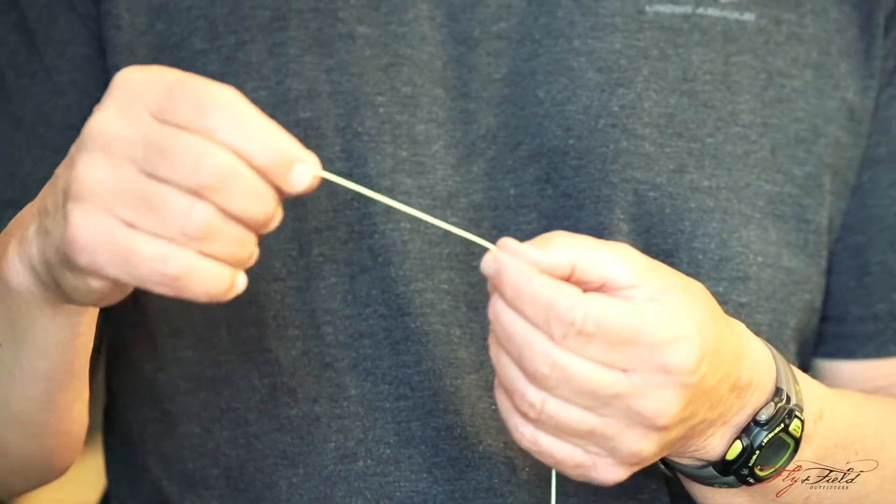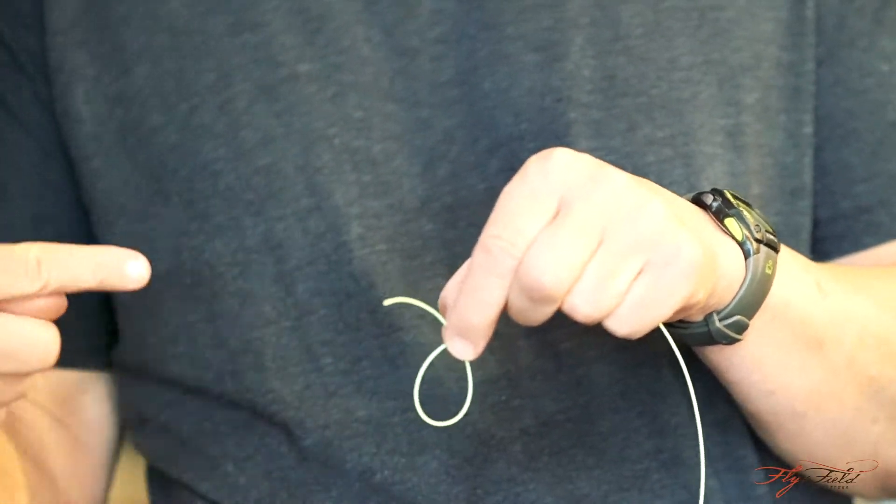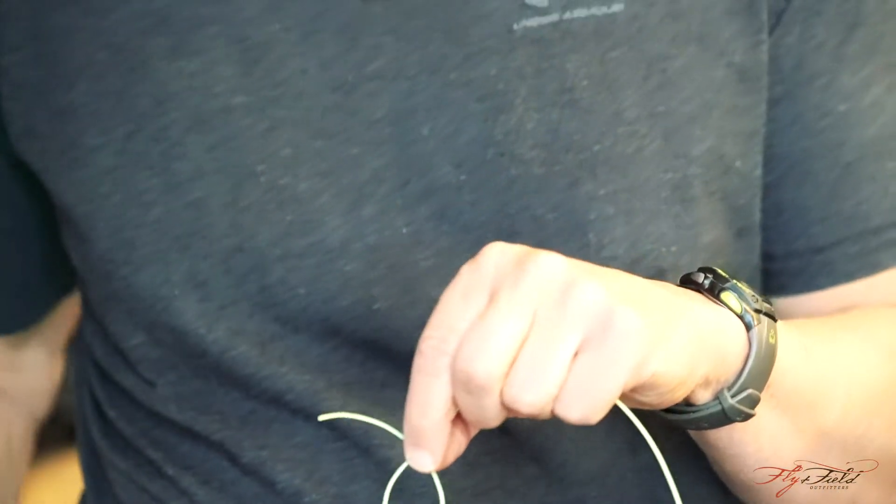We're using fly line here to illustrate. We're just making a loop. And what I like to do is point that tag end up rather than go at it sideways, and you'll see why in a second.